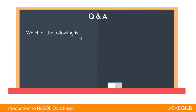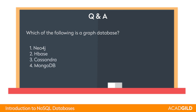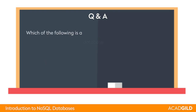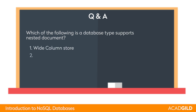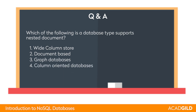The second question: which of the following is a graph database — Neo4j, HBase, Cassandra, or MongoDB? The answer is Neo4j. The third question: which database type supports nested documents — wide column store, document-based, graph databases, or column-oriented databases? The answer is document-based. Congratulations if you got it right.